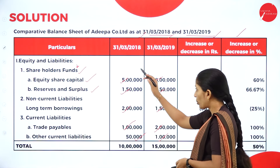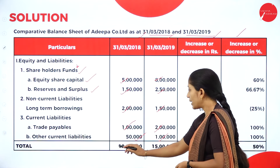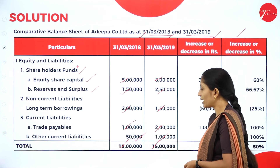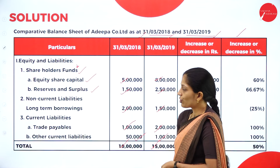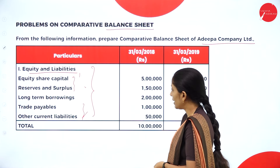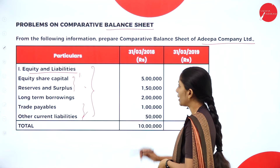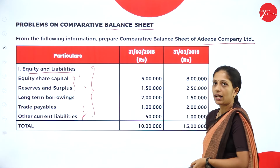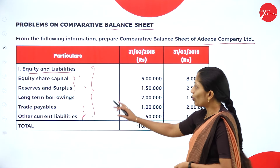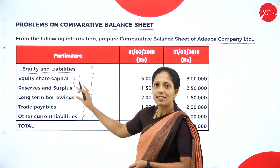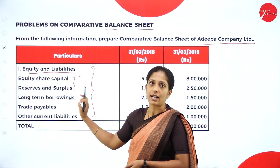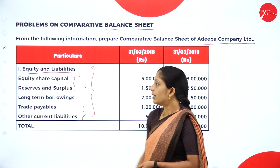Next, trade payable and other current liabilities come under the heading current liabilities. Write third heading current liabilities, then trade payable and other current liabilities with the respective amounts given. You will then total everything: you get 10 lakh and 15 lakh. Whatever headings are required, you have to write in the exact order.